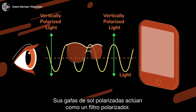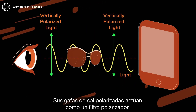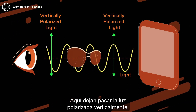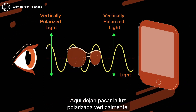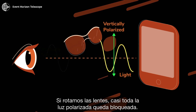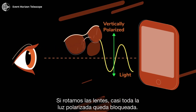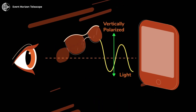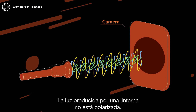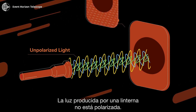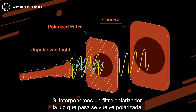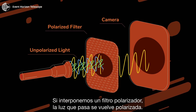Your polarized sunglasses are a polarized filter. Here, they let vertical polarization through. If we rotate them, almost all the polarized light gets blocked. Light produced by a torch is unpolarized. When we place a polarized filter in between, the light becomes polarized.